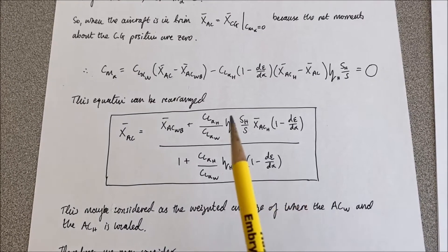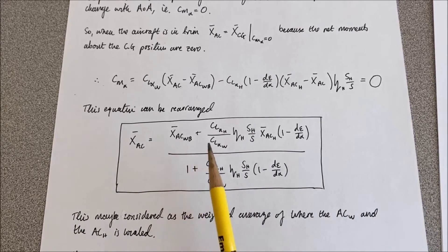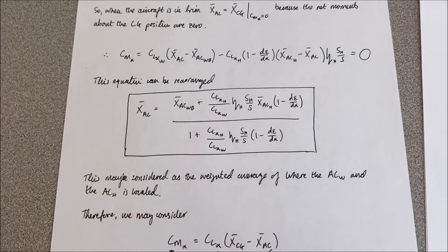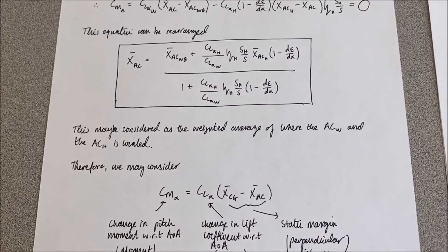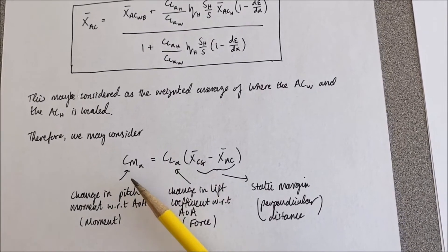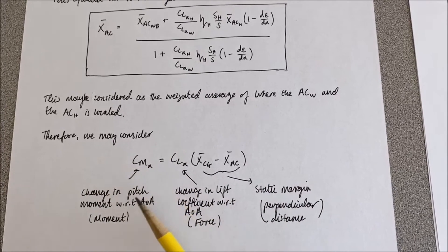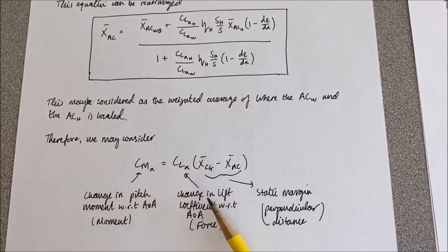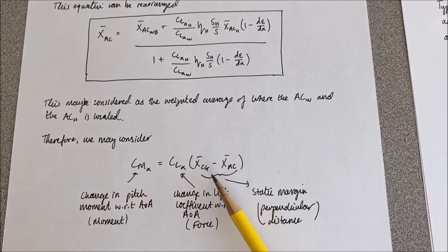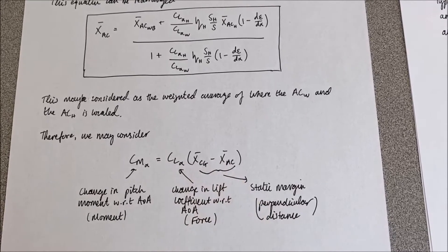What we've essentially done is averaged out the aerodynamic centre of the wing and body and the aerodynamic centre of the horizontal tail. The next thing we can do is look at our pitch moment equation and say that the pitch moment is a force times a perpendicular distance. Our moment here is the pitch moment with respect to angle of attack, our force is the lift coefficient with respect to angle of attack, and the moment arm is the difference in distance between the centre of gravity position and the aerodynamic centre of the whole aircraft.